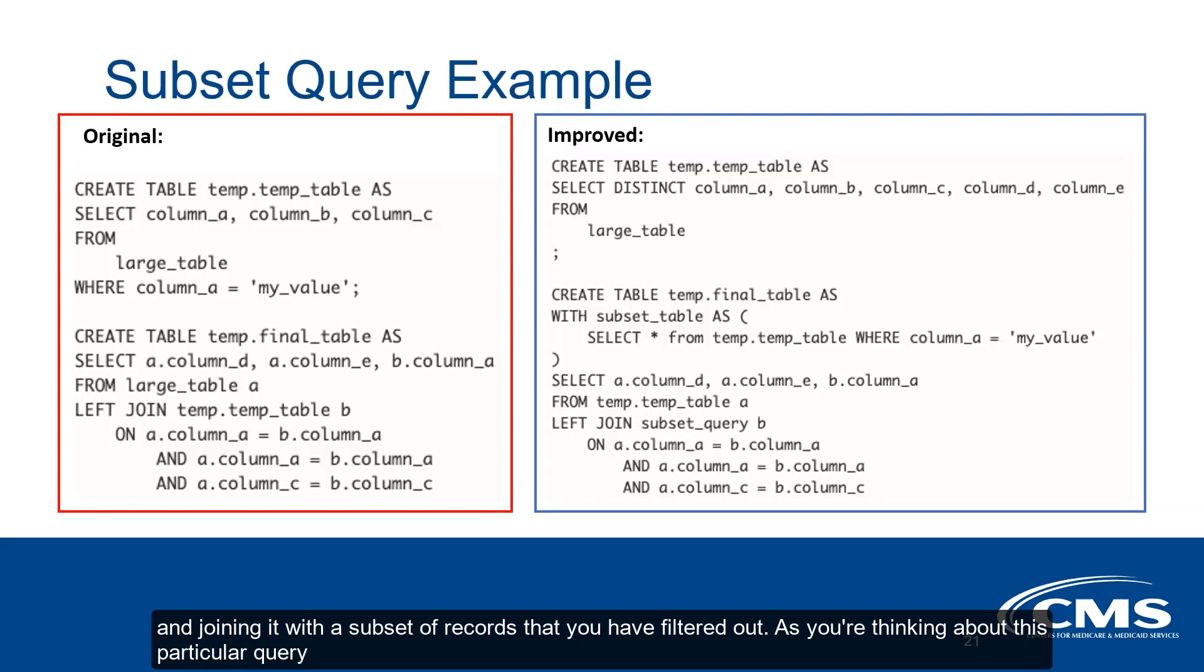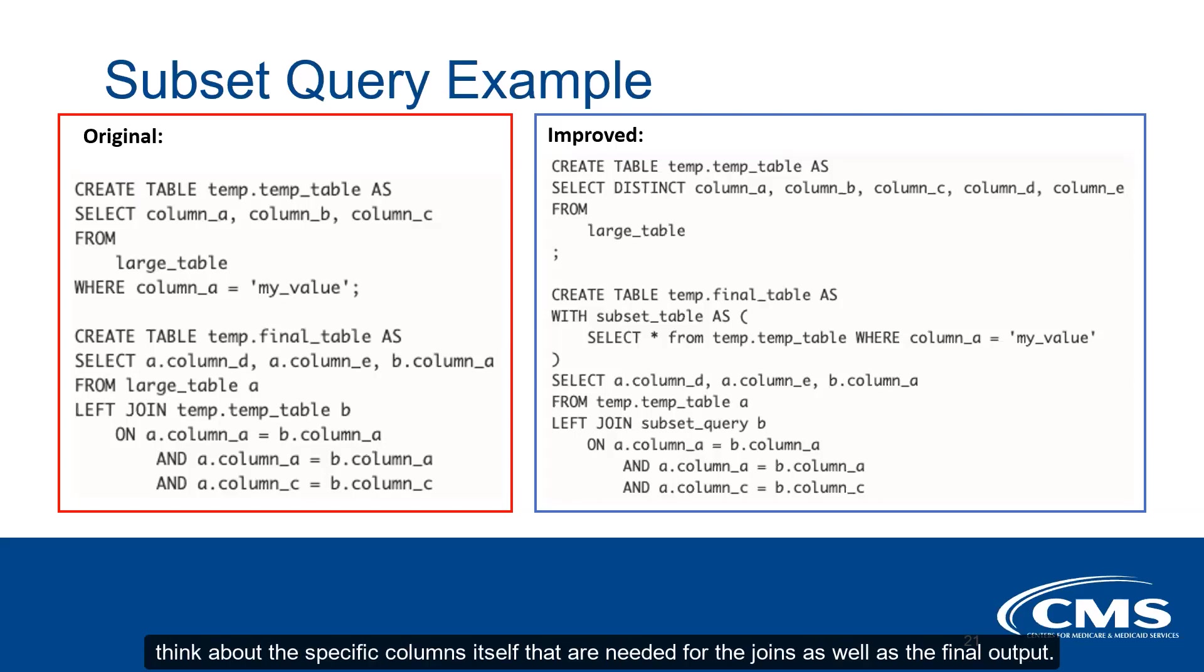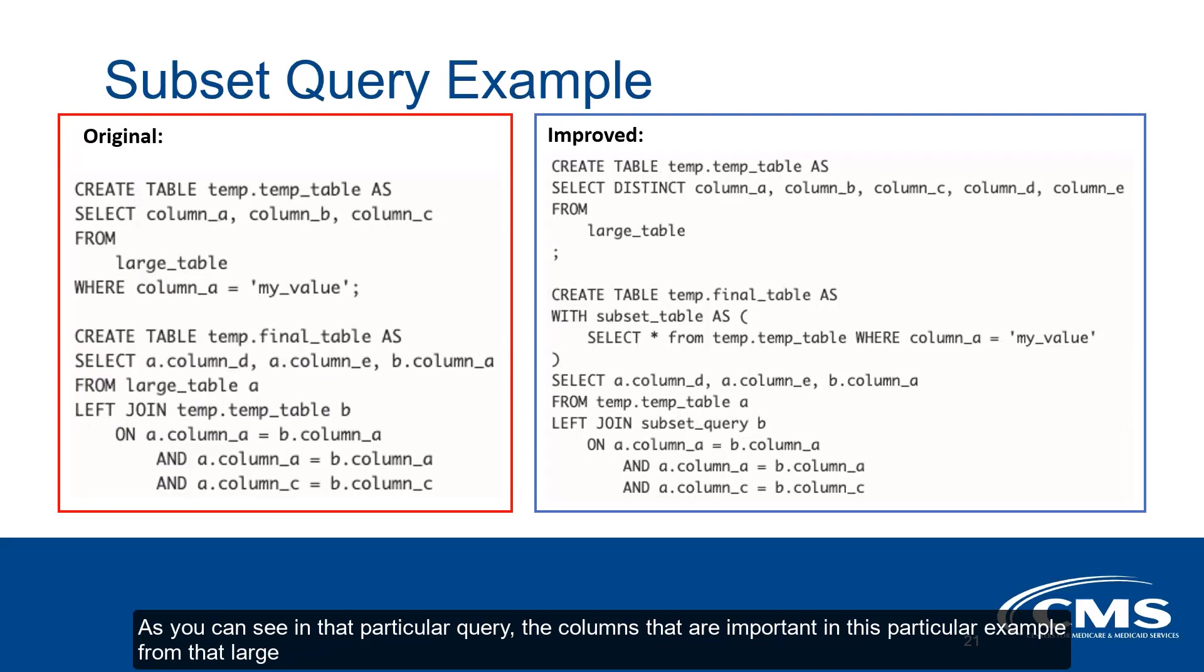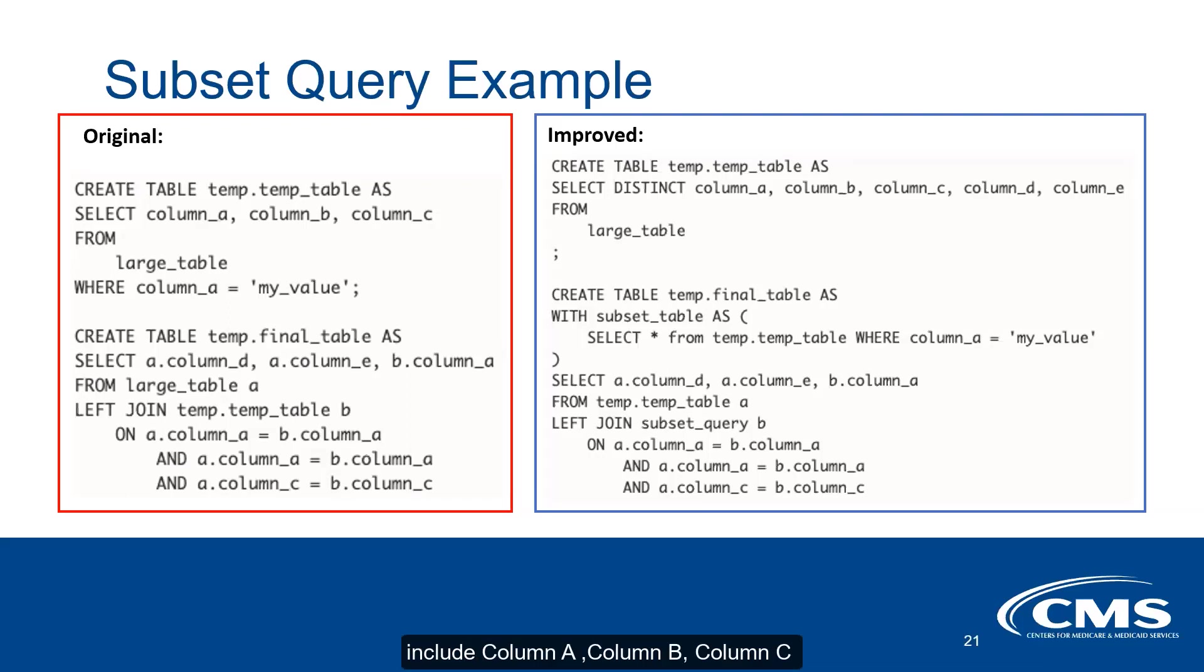As you're thinking about this particular query, think about the specific columns that are needed for the joins as well as the final output. The columns that are important in this particular example from that large table include column A, column B, column C, and column D. How you can improve and optimize this query is to introduce a subset query that you see on the right side.